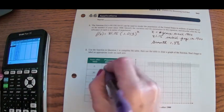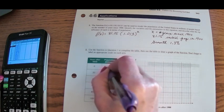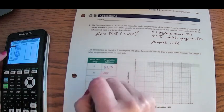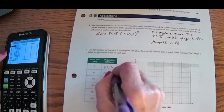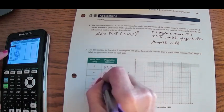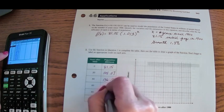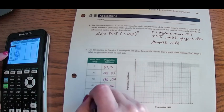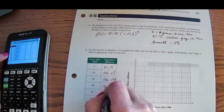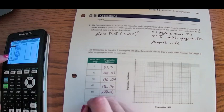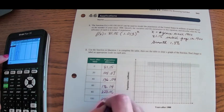So in the year 1900, the population was 81.15, and this is in millions. In 20 years, 1920, it was 105.07. 40 years, it was 136.04. 60 years, it was 176 million. 80 years, 1980, it was 228 million. And 100 years from 1900, which is the year 2000, it's 295.28.